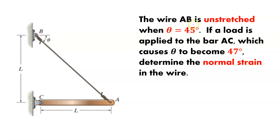The wire AB is unstretched when theta is equal to 45 degrees. If a load is applied to the bar AC which causes theta to become 47 degrees, determine the normal strain in the wire.